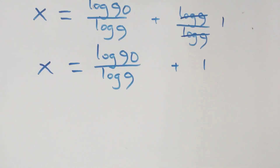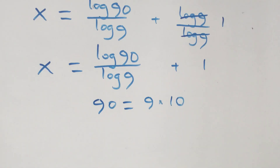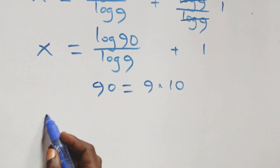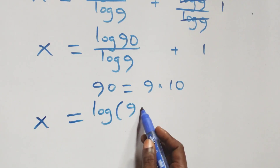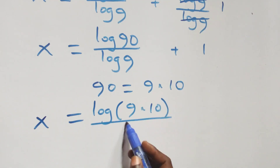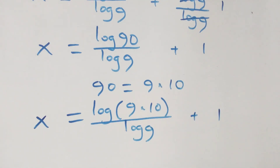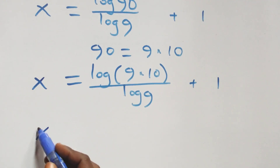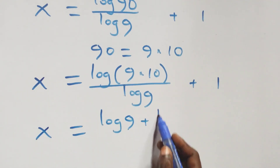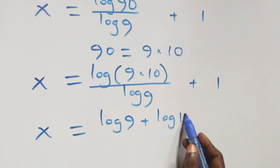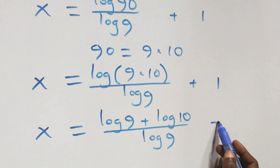Also here, we can write 90 as 9 times 10. What we have here becomes x equals to log of 9 times 10, over log 9, plus 1. This also follows the log rule, and we have x equals to log 9 plus log 10, over log 9, plus 1.